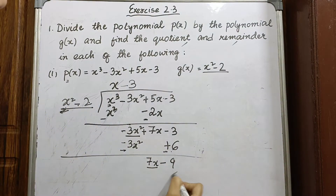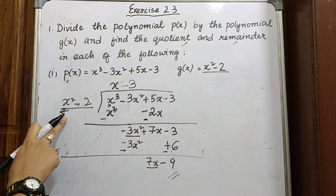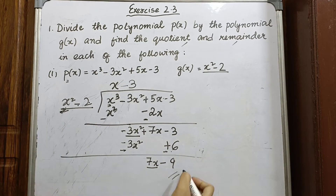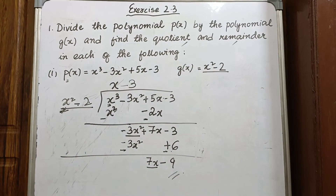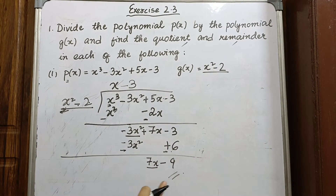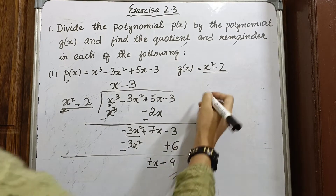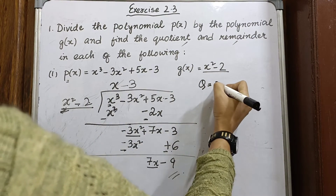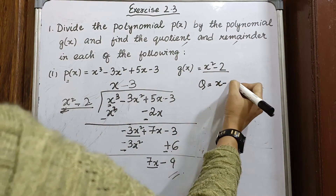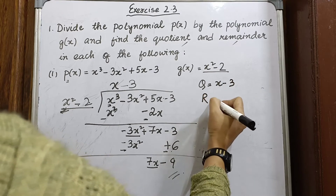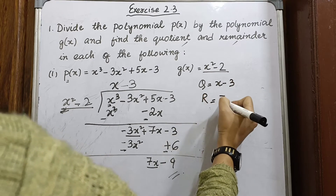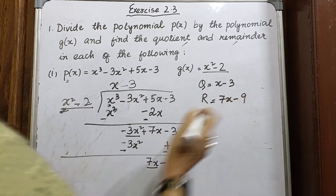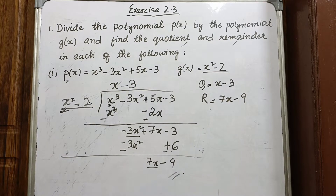Now we try to divide 7x minus 9 by x². But 7x divided by x² — you cannot divide because the degree of the remainder is smaller. So this is the remainder. The quotient is x minus 3 and the remainder is 7x minus 9.